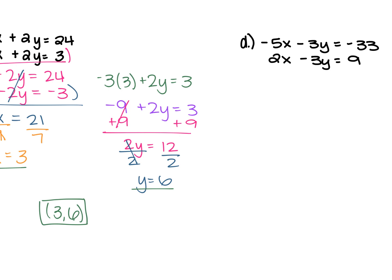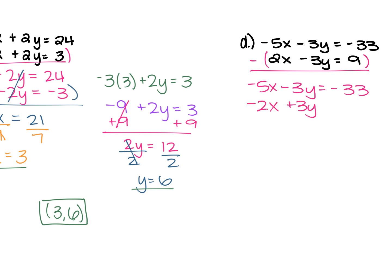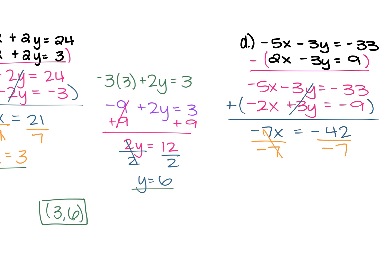For example D, we have negative 5x minus 3y equals negative 33, and 2x minus 3y equals 9. We're going to change the sign on everything in the bottom so the two y coefficients become opposites. Rewrite the top as negative 5x minus 3y equals negative 33. The bottom becomes negative 2x plus 3y equals negative 9. Now add: negative 5x plus negative 2x is negative 7x, the y's cancel, and negative 33 plus negative 9 — same signs, add the numbers: 33 plus 9 is 42, so negative 42. Divide negative 7x by negative 7 and x equals 6.